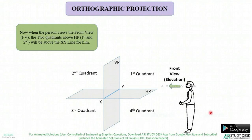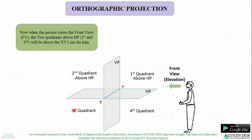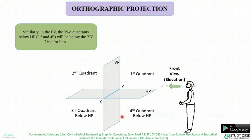Now let us see how to represent these quadrants with respect to the XY line. When we draw projections on a sheet, we do not usually draw HP and VP — we draw only the XY line. When the person is viewing the front view, the 2 quadrants above HP are 1 and 2, so these 2 quadrants will be above the XY line for him. Similarly, quadrants 3 and 4, which are below HP, will be below the XY line.